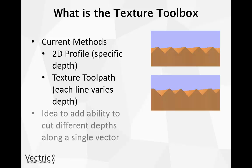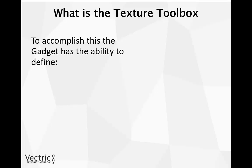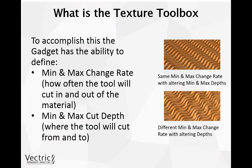With the Texture Toolbox, the idea was to add the ability to cut different depths along a single vector, so you can get a wave effect that goes up and down throughout the whole vector. To accomplish this, the gadget has the ability to define a minimum and maximum change rate — this is how often the tool will cut in and out of the material along a single vector. We can also specify our minimum and maximum cut depths, so where we want to cut from and to during one of the changes across the vector. As you can see in the top right image, using the same minimum and maximum change rate with altering min and max depth gives that wave effect. The image underneath uses a different minimum and maximum change rate with altering cut depths, where each vector starts to cut into the others across the entire length of the texture panel.